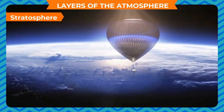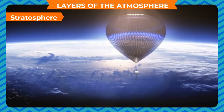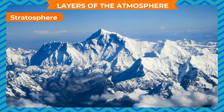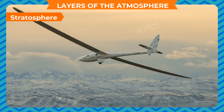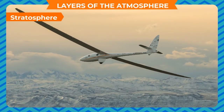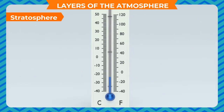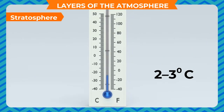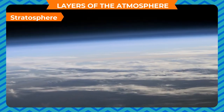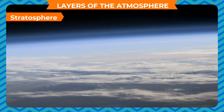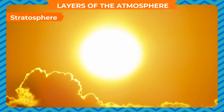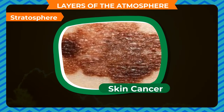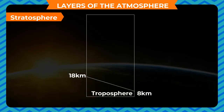The stratosphere starts just above the troposphere and extends up to a height of 50 kilometers above the surface of the earth. Compared to the troposphere, this part of the atmosphere is dry and less dense. The temperature in this layer increases gradually to minus 3 degrees Celsius. This layer is very important because it contains ozone, which protects us from the harmful ultraviolet rays of the Sun that can even cause skin cancer. The top of the stratosphere is called the stratopause, which separates the stratosphere from the mesosphere.